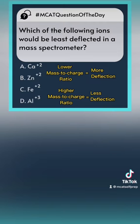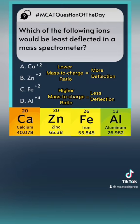To properly solve this problem we're going to need our handy dandy periodic table. Since we need to solve this problem quickly on the MCAT, we're going to round all the masses to the nearest whole number that's divisible by the ion's charge.